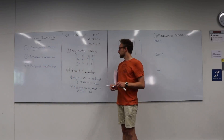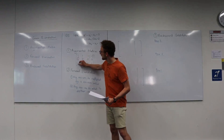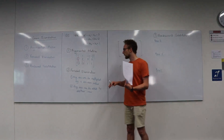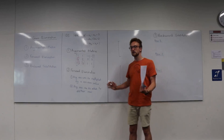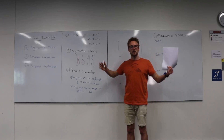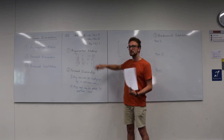Now, forward elimination. Our goal is to set the bottom left corner of the matrix to 0 — these 3 elements we want to be 0. To get there we use row manipulation. We have 2 rules: first, any row can be multiplied by a non-zero scalar; second, any row can be added to another row. So I can add row 1 to row 2, or subtract row 3 from row 1.